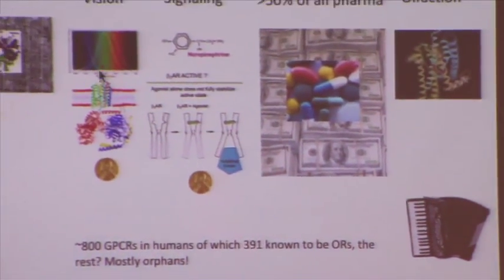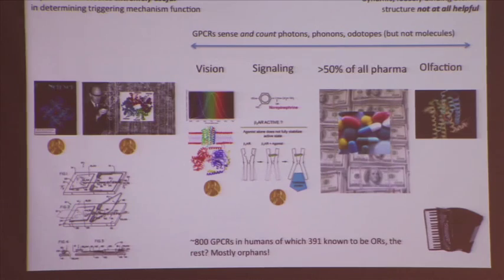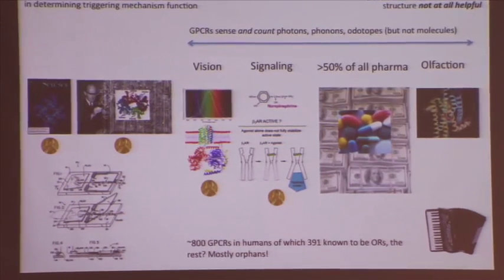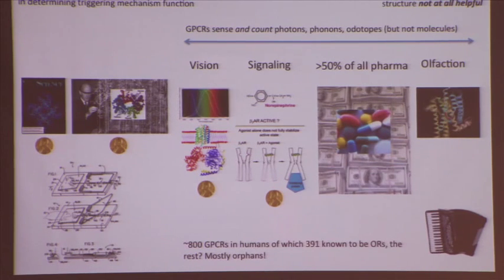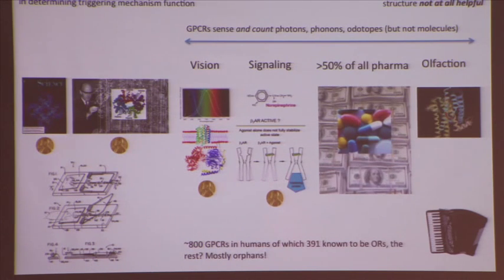Rhodopsin is nice and robust. It will actually make a two-dimensional film stable and operational at 140°C — above boiling. It crystallizes relatively easily and has its ligand, the little molecule that its brethren would need to be recognizing. In the case of rhodopsin it's bound there forever, having changed from a system that recognizes small molecules into a system that recognizes light — with the same downstream signaling: seven transmembrane domains, hydrophobic transmembrane alpha helices, the G-protein cascade.